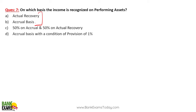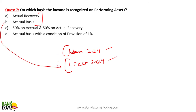Accrual basis means income is recognized when it falls due — for example, EMI due on 1st January and 1st February is recognized on those dates. Actual basis means income is recognized only when it is actually received — for example, EMI due on 1st January but actually received on 5th January is recorded on 5th January.